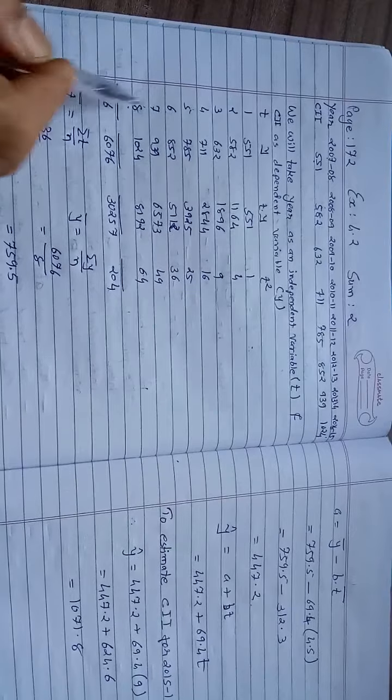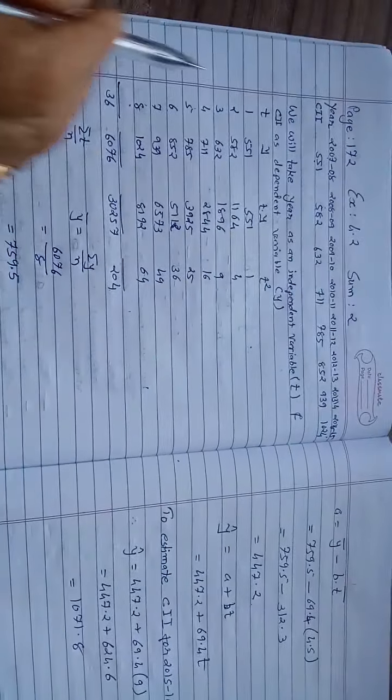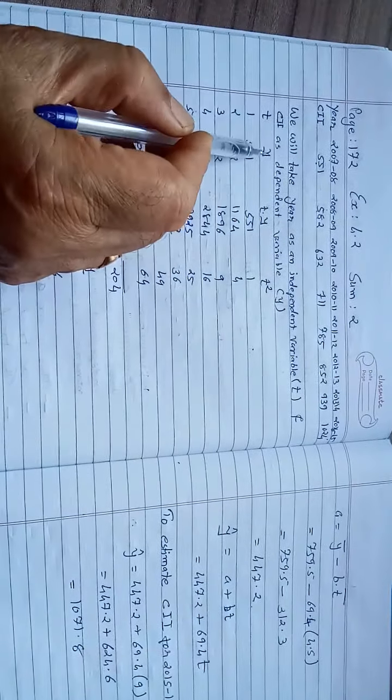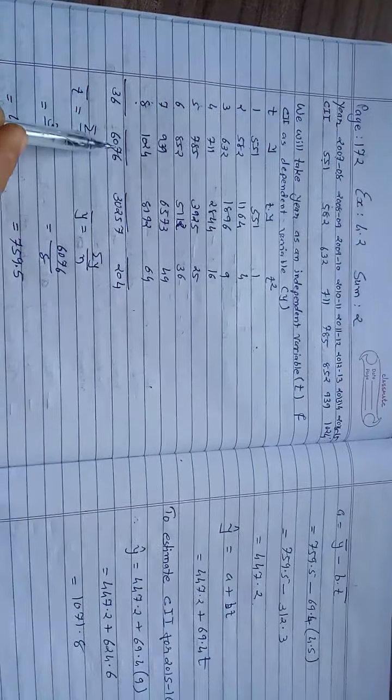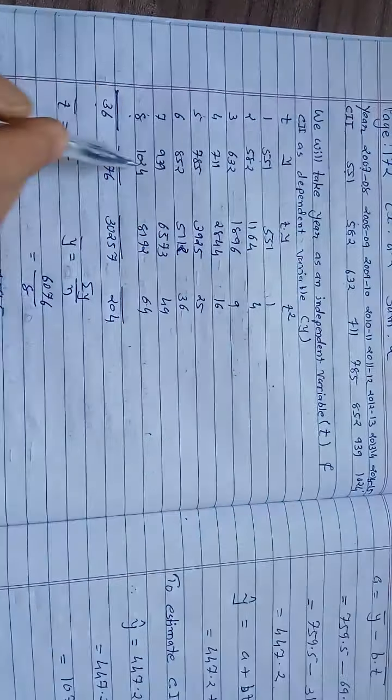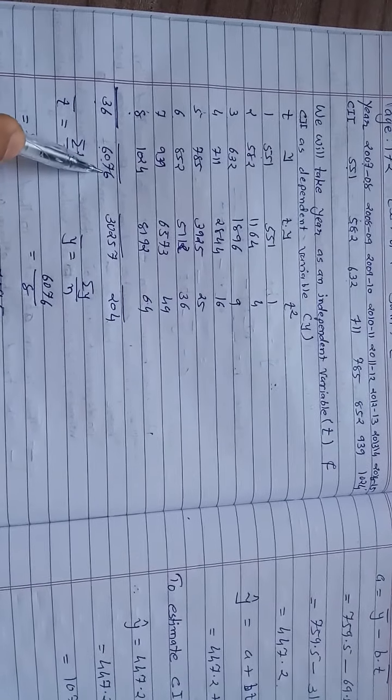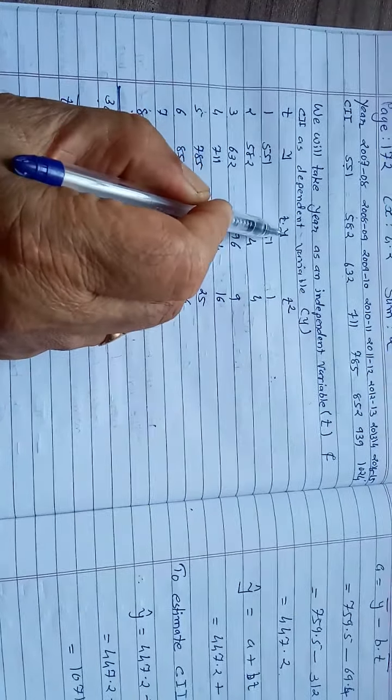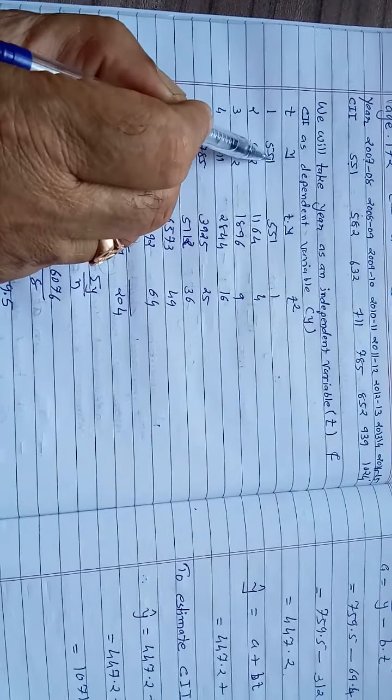Continuing t as 5, 6, 7, 8. Eight values are given. CII we will write as y. These values are written. Sum of t column is 36. Sum of y column is 6076.